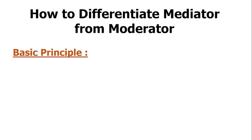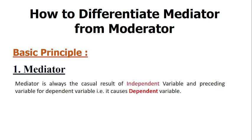Now, how do we differentiate the moderator from the mediator? Let's discuss the basic criteria. For the mediator, it is necessary that it is the result of the independent variable and the preceding variable for the dependent variable. As in the previous example, shyness was caused by the language deficit (the independent variable), and then shyness causes low confidence (the dependent variable).